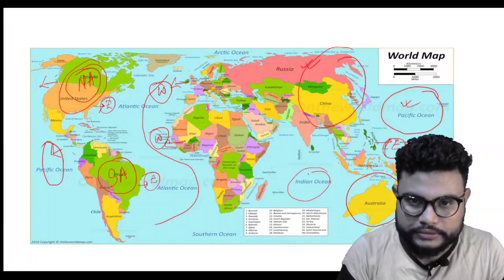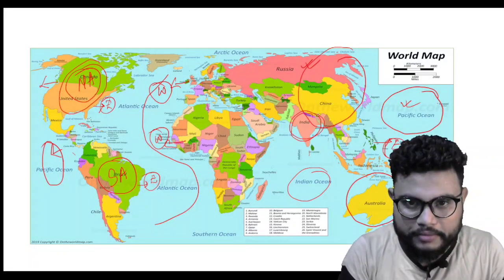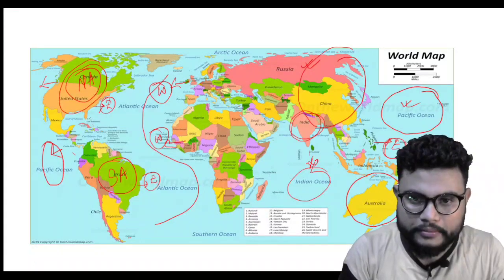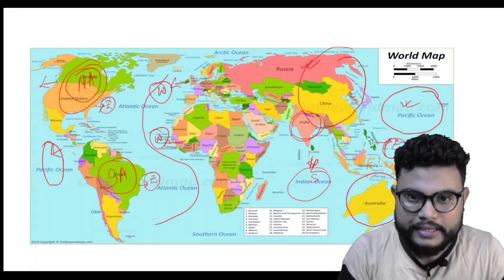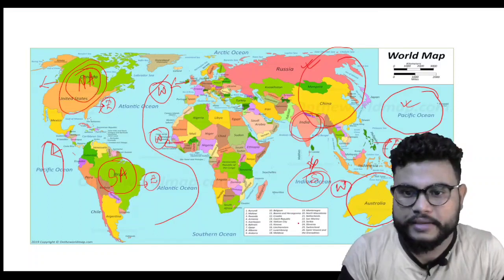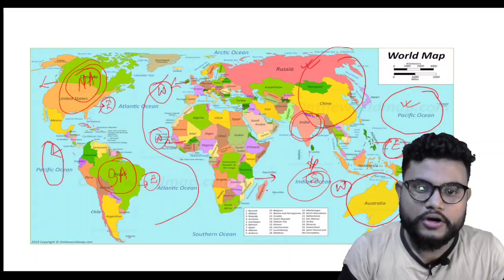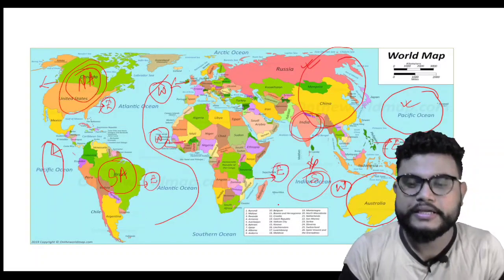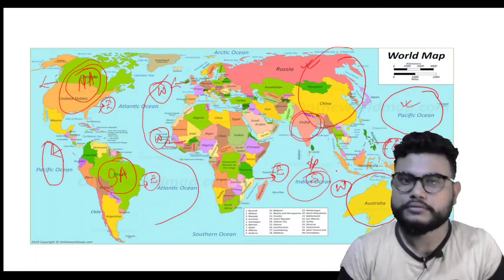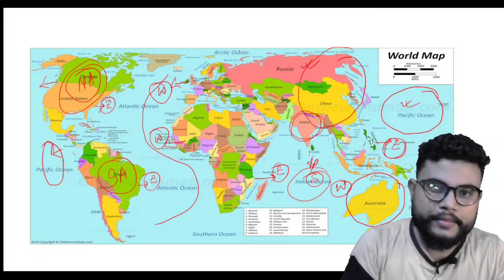Then we will talk about the third largest ocean in the world, which is the Indian Ocean — south of India, our beloved Bharat. It is to the west of Australia, and to the east of Africa and Madagascar. That is our Indian Ocean.